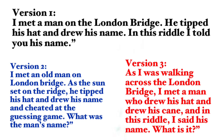The first version says: 'I met a man on the London Bridge, he tipped his hat and drew his name. In this riddle I told you his name.' The second version says: 'I met an old man on London Bridge, as the sun set on the ridge, he tipped his hat and drew his name and cheated at their guessing game. What was the man's name?' The third version says: 'As I was walking across the London Bridge, I met a man who drew his hat and drew his cane, and in this riddle I said his name. What was it?'